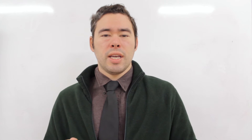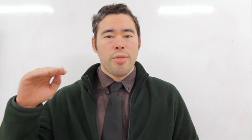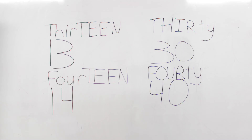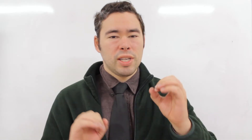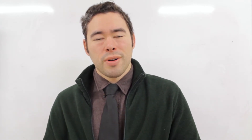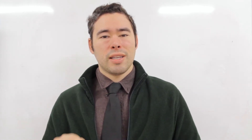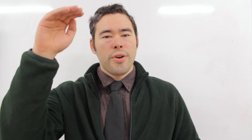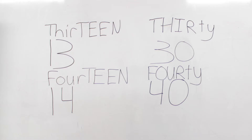Here's how it works. With the number 13, the teen gets the stress. Thirteen. Thirteen. But then with the number 30 — three, zero — it would be the first syllable that gets the stress. Thirty. Thirty.